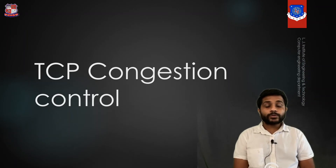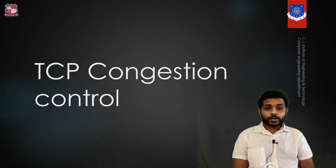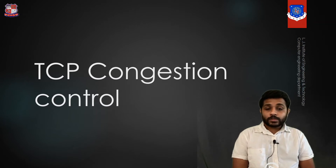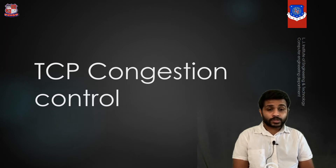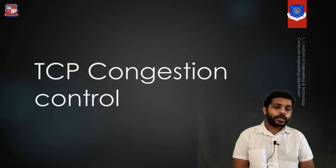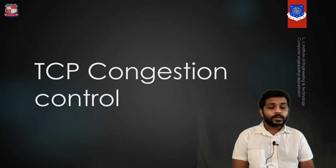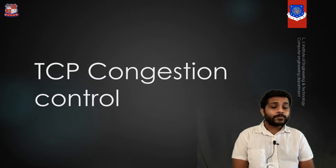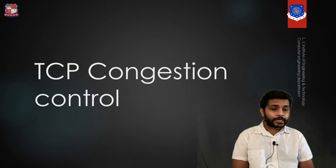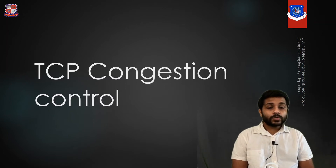Today we are going to see how congestion control is done by the Transmission Control Protocol. Before that, we should know what congestion is. Suppose the sender is sending packets to the receiver and the receiver window capacity is 10 packets — it means the receiver can receive 10 packets at a time. Now if the sender is able to send 20 packets, it will not send 20 packets at a time; it will only send 10 packets at a time.